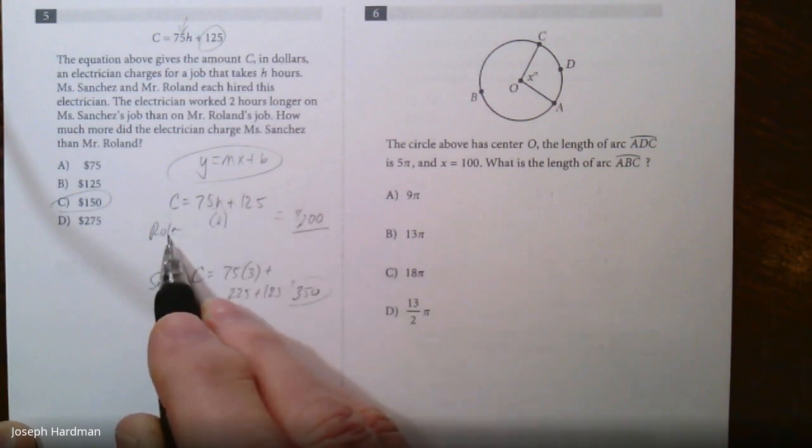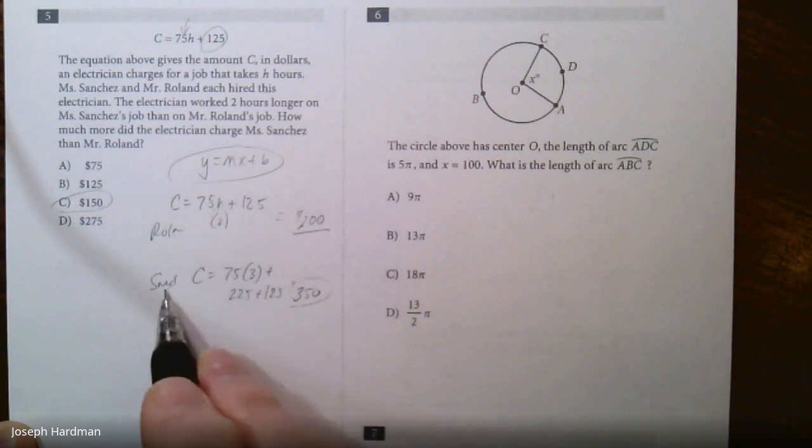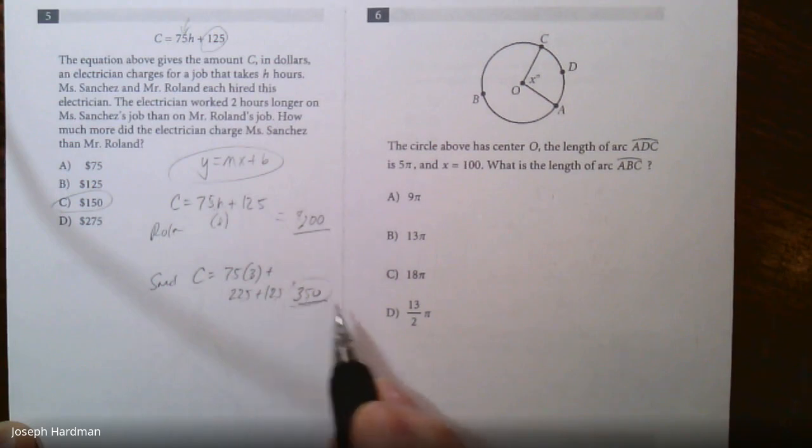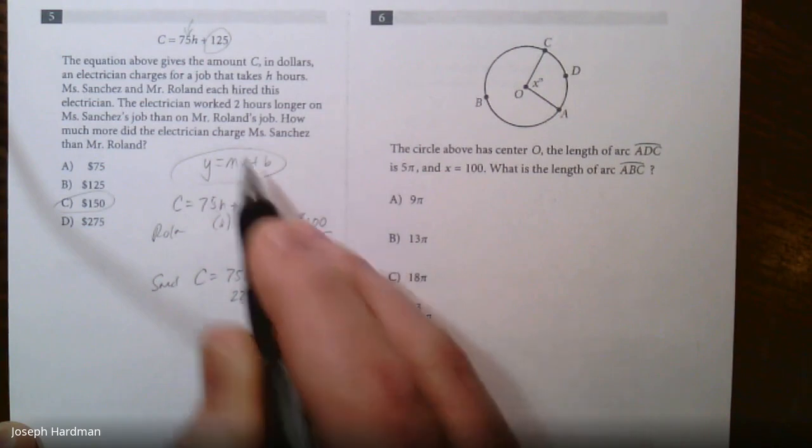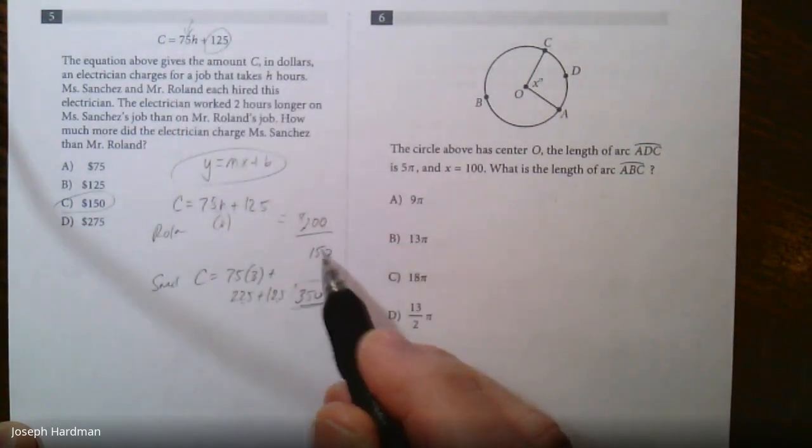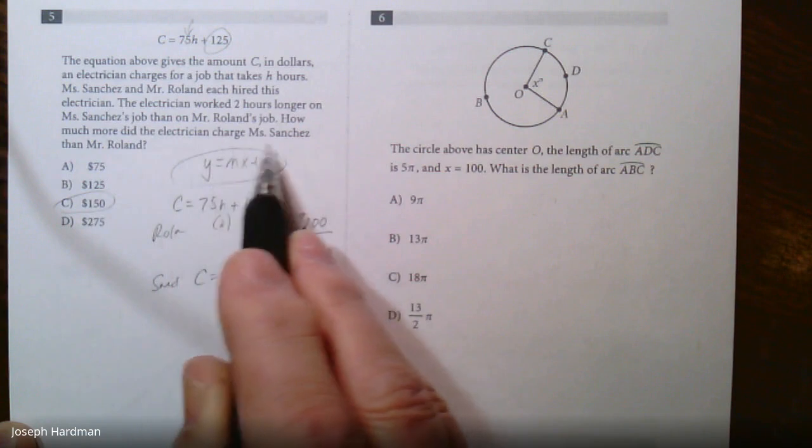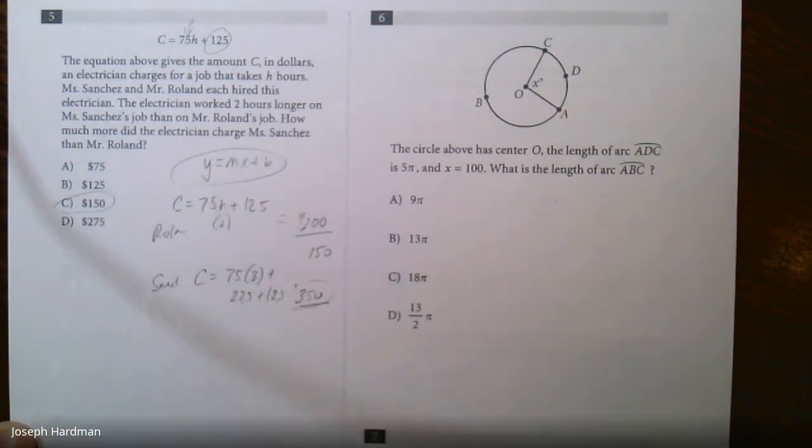Now if he worked 1 hour at Mr. Rowland's house, worked 3 hours at Miss Sanchez's house, so I take 3 times 75, which is 225, add the 125, that's 350. Again, look, there's a difference, 150 bucks. That's double this. So it says here, how much more did the electrician charge Miss Sanchez? Well, it's 150 bucks.